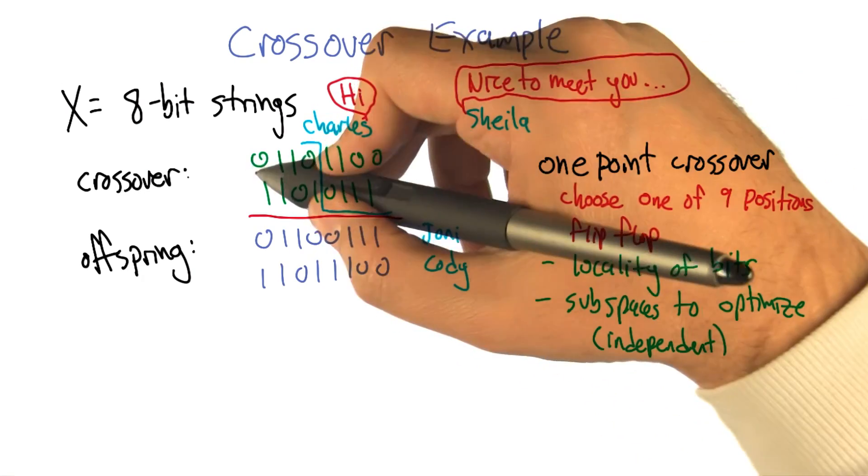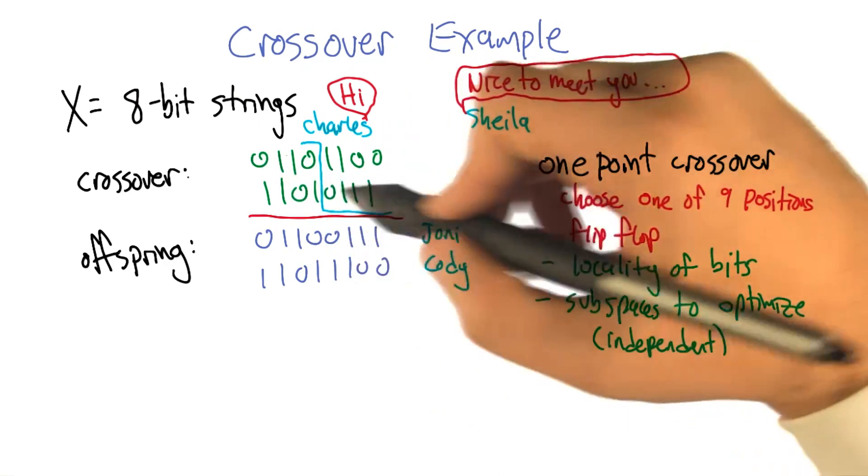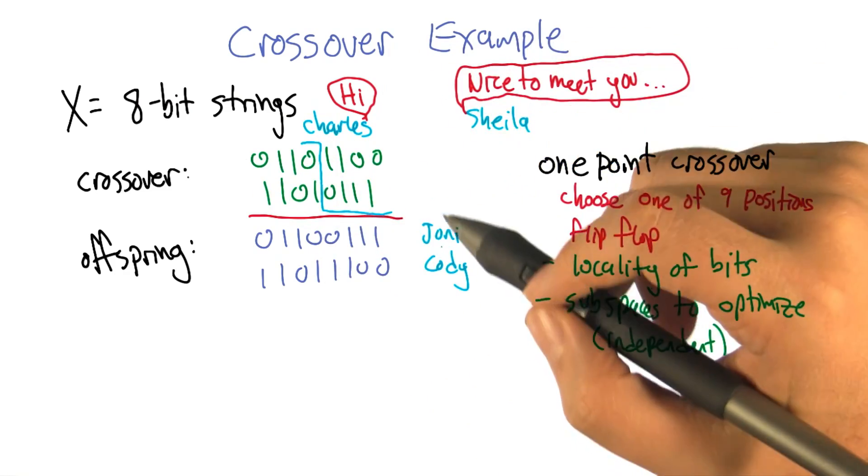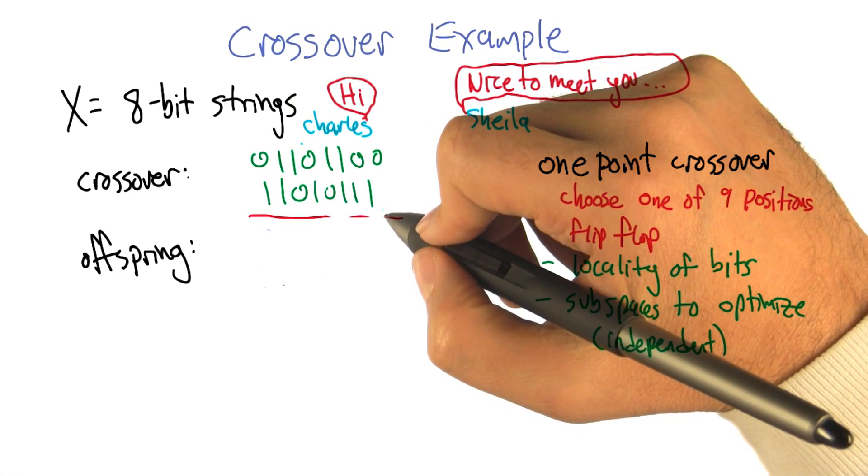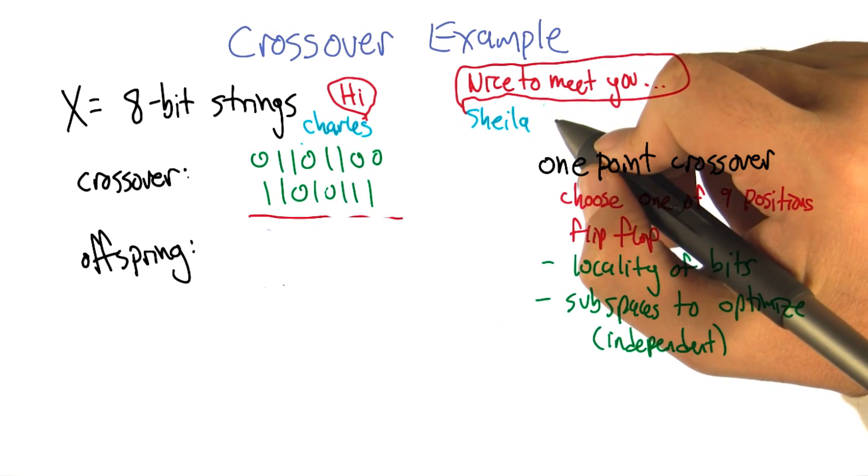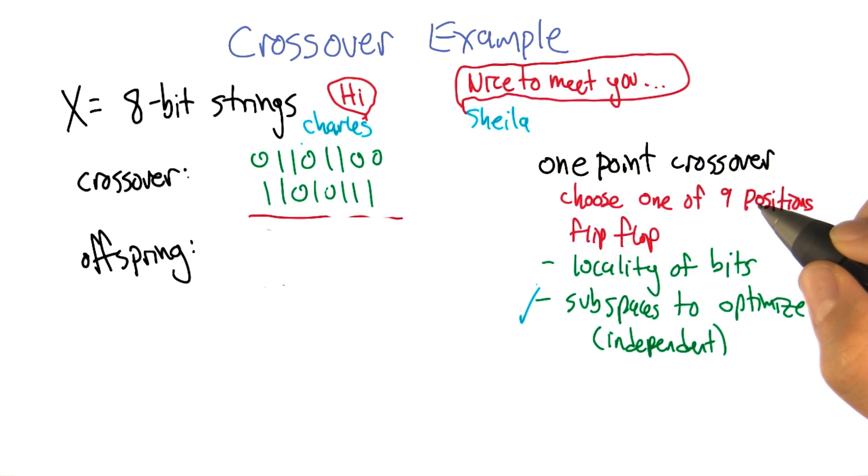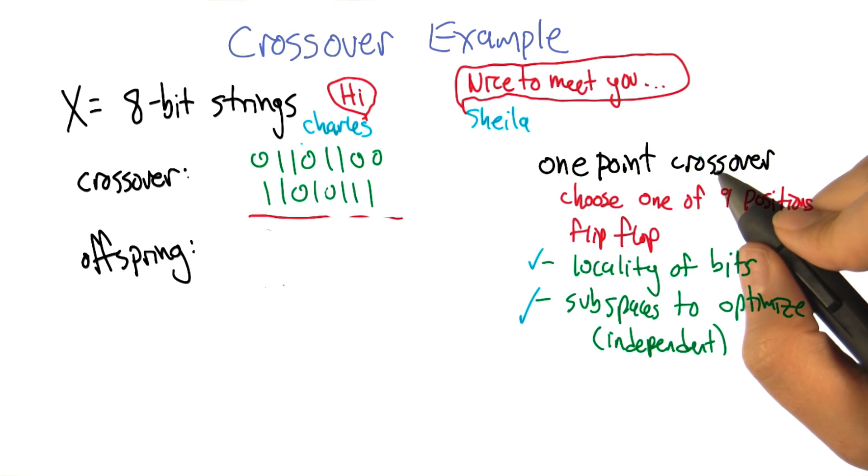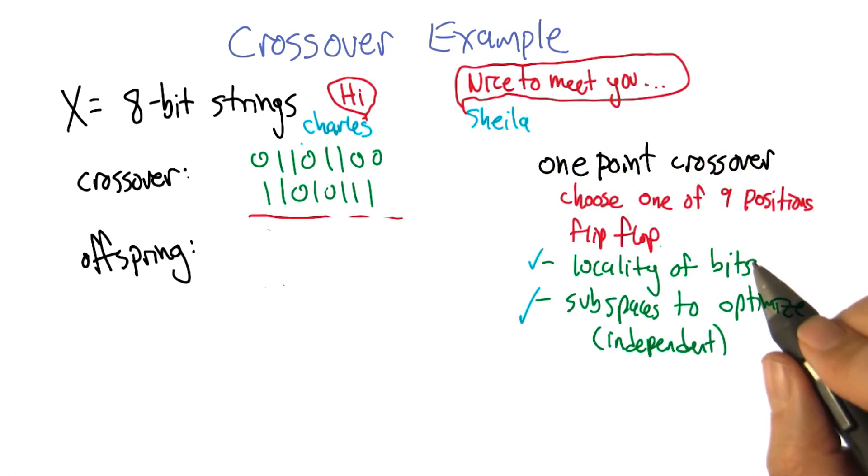Sure. All right. So, and if it is the case that the sequence of the ordering of the bits matters, we have this locality property. This is actually a fairly sensible thing to do. But can you imagine any other way of combining these bits together to get offspring? Well, I can think of a lot. Well, so let's focus on ideas where we still have this subspace to optimize property, but we don't really have a locality of bits property. That the ordering doesn't matter anymore. So keeping them clumped together like that, we don't think that that's a useful thing.